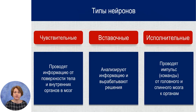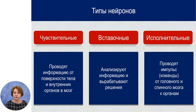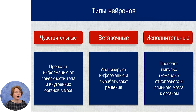Нейроны выполняют в организме разные функции. Есть чувствительные нейроны – они проводят информацию от поверхности тела и внутренних органов в головной или спинной мозг. Вставочные нейроны анализируют информацию и вырабатывают решения. А исполнительные, или двигательные, нейроны проводят импульс – то есть команды от головного и спинного мозга к органам.